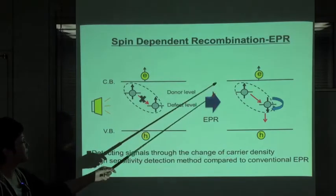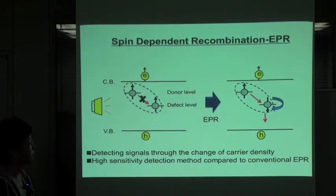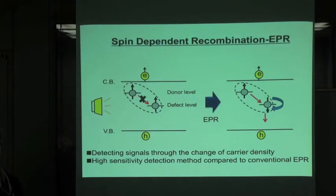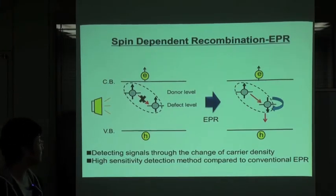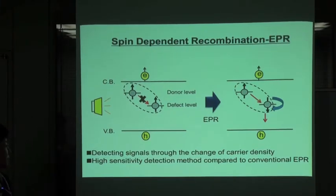If the recombination occurs, the carrier density changes. In SDR-EPR measurement, we detect the signals through the change of carrier density. This method is known as a highly sensitive method compared to the conventional EPR.